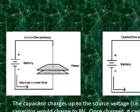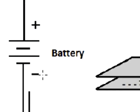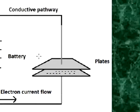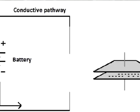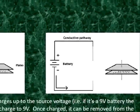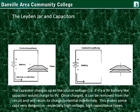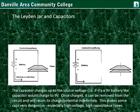If there's a 9-volt battery — here's the symbol for a battery — the capacitor will charge up to 9 volts. Once charged, it can be removed from the circuit and it will retain its charge and potential indefinitely. This makes some capacitors very dangerous, especially high voltage, high capacitance types. The capacitor basically consists of two plates very, very close to one another.